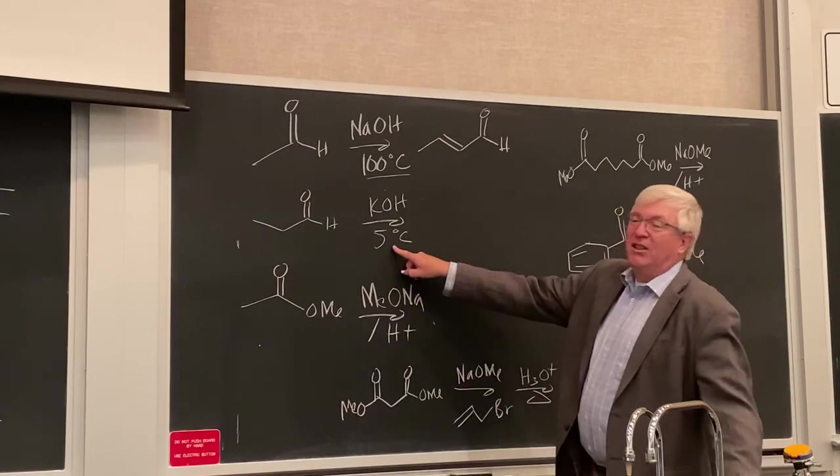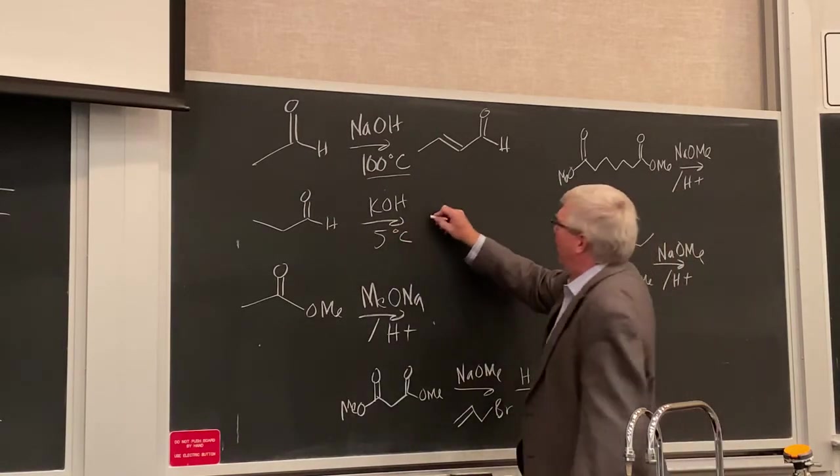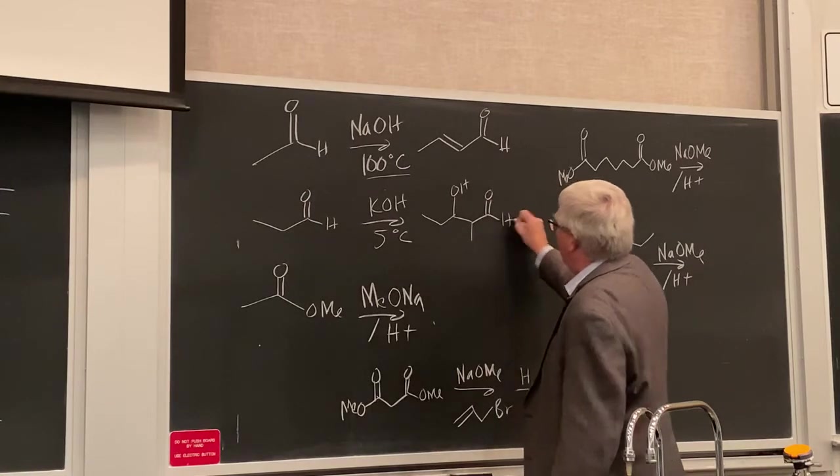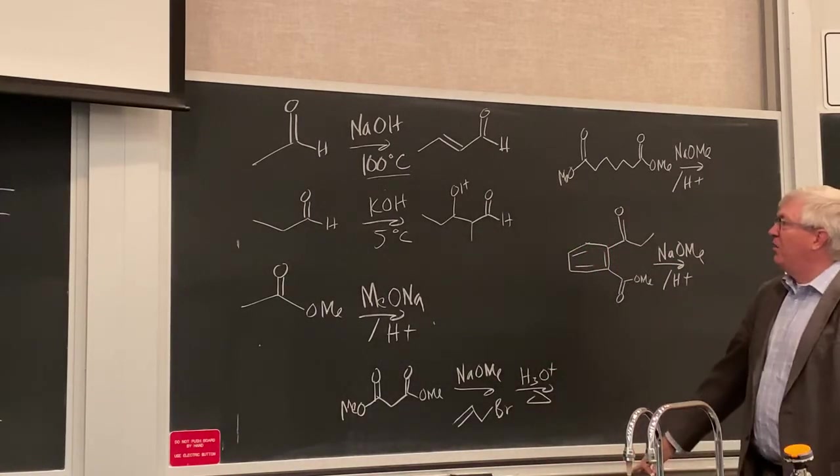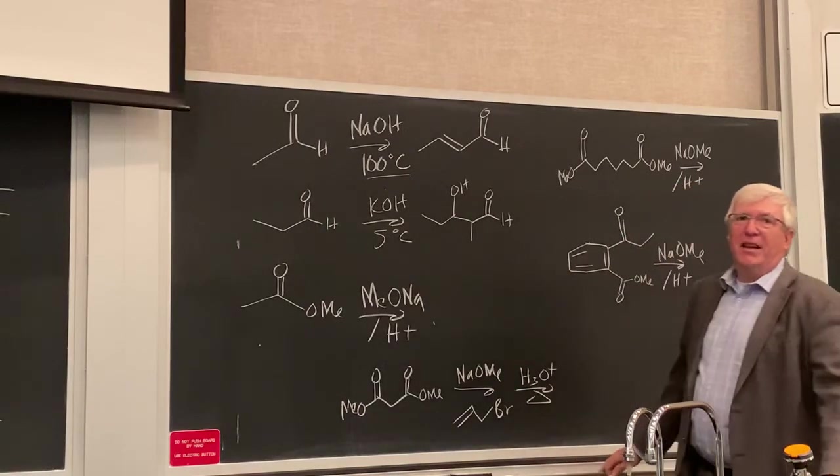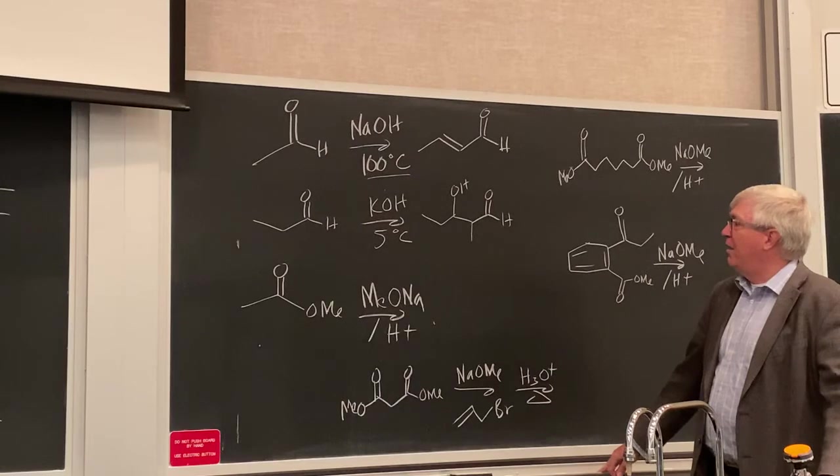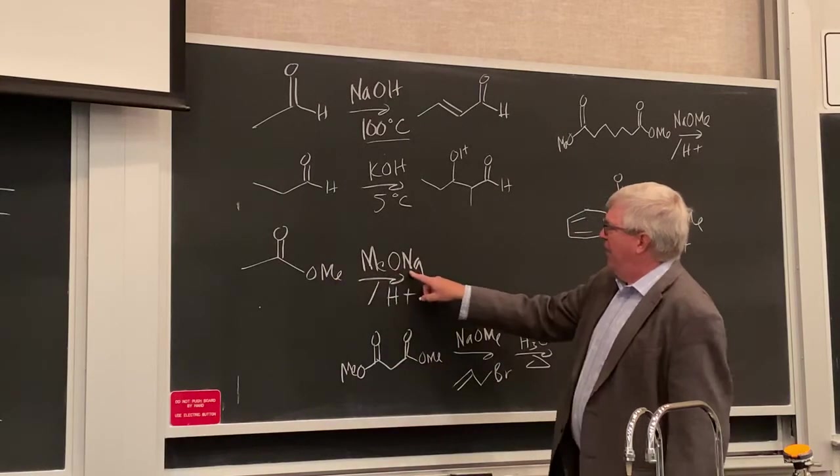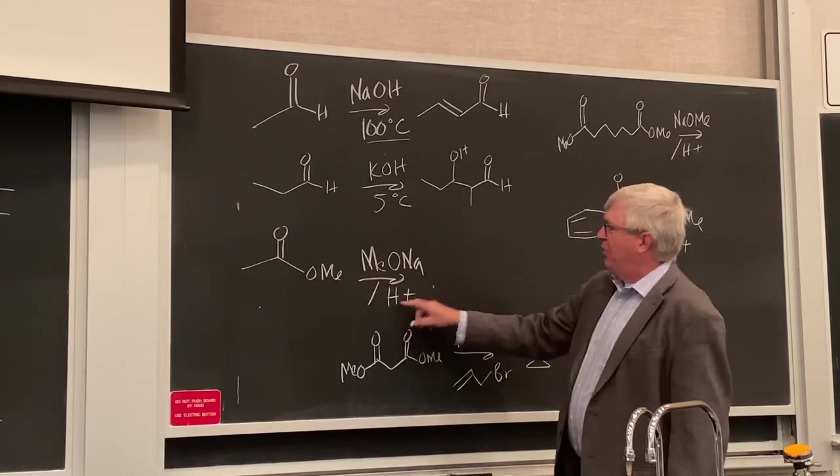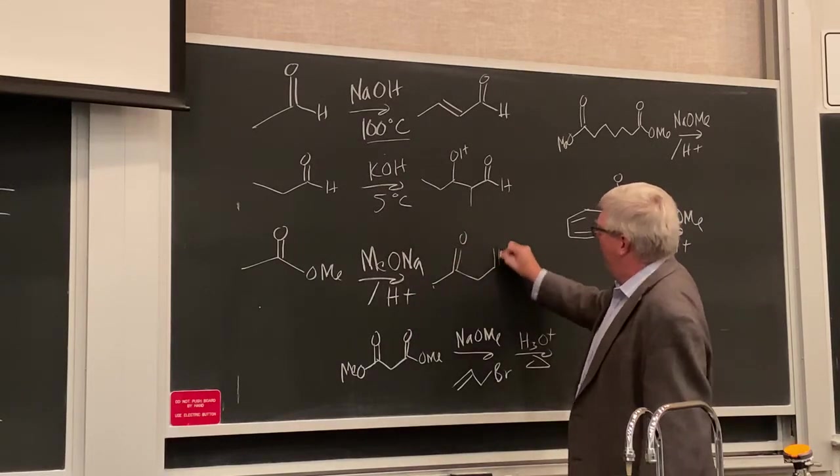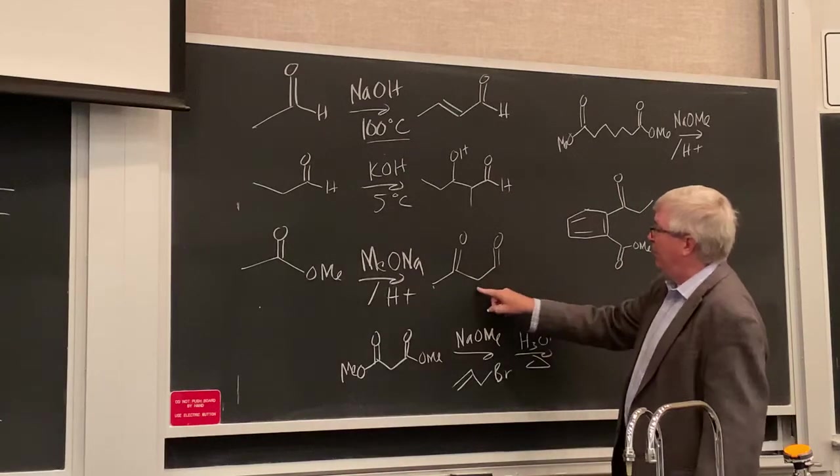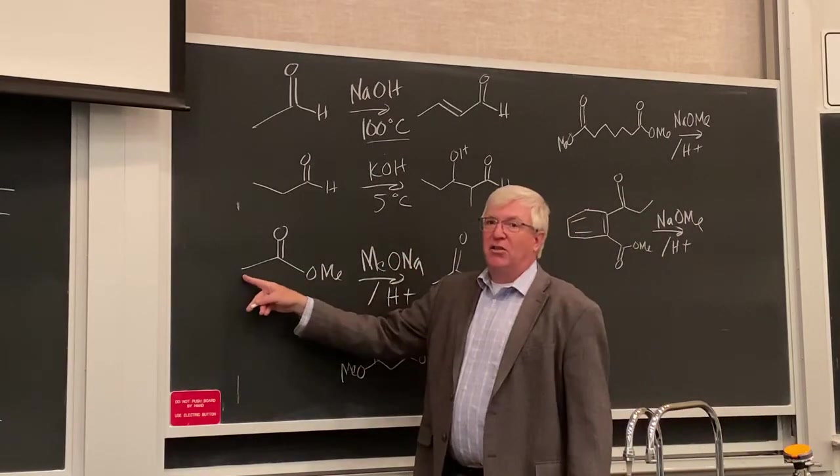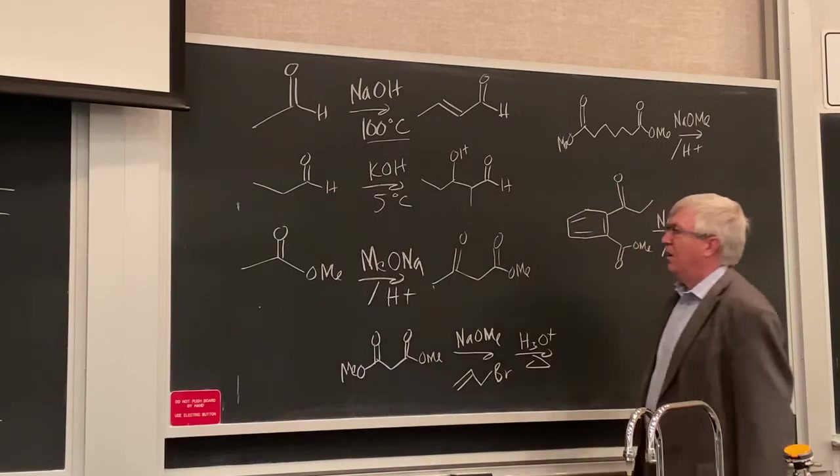If you have a higher temperature, you can eliminate water and form what's called the aldol condensation product. Now that's contrasted with this conditions, right? So we have five degrees here with another aldehyde. And there we're going to get the aldol product. Self-condensation of that aldehyde with itself. And at the lower temperature, we stop at the beta-hydroxy aldehyde product there. And then we have the Claisen reaction here, which is with methyl acetate. And the base corresponds to the ester. And then we have to acidify.